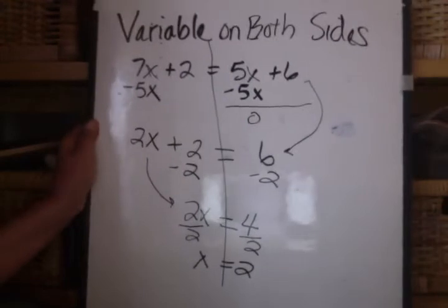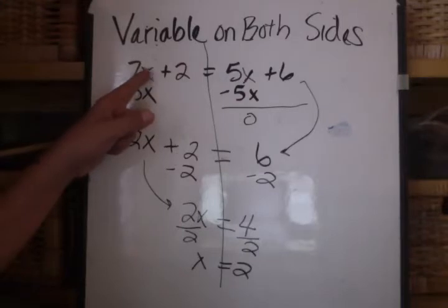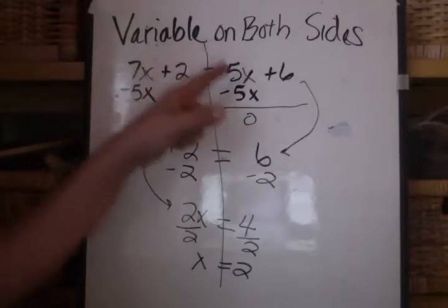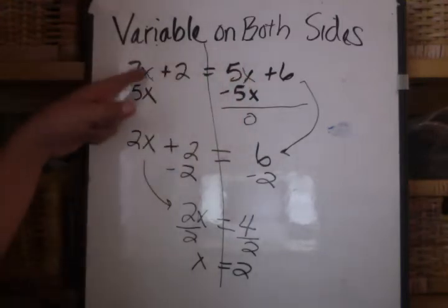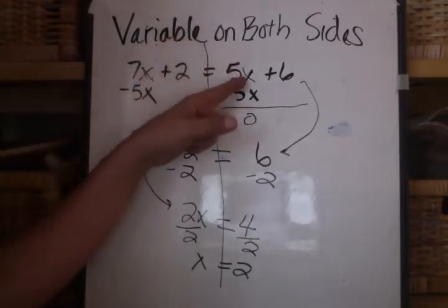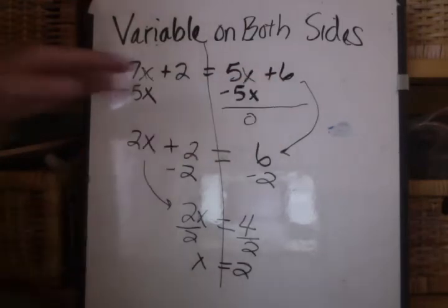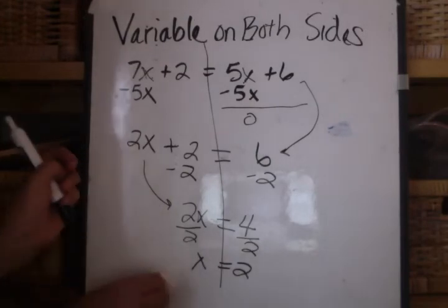And if I go back and put the value of 2 here in my original equation, 7 times 2 is 14 plus 2 is 16. And on this side, 5 times 2 is 10. I'm sorry, let me say that again. 7 times 2 is 14 plus 2 is 16. And on this side of the equation, 5 times 2 is 10 plus 6 is 16. So, on both sides of the equation, the value is 16. Okay, look for more videos and more examples.